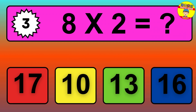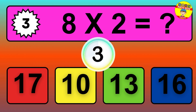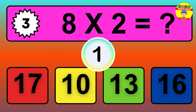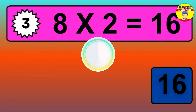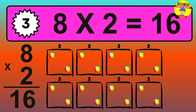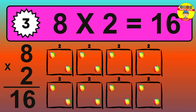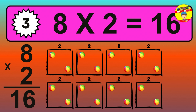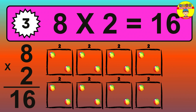Question 3. 8 times 2 equals what? The answer is 8 times 2 is 16. To calculate, we have 8 groups with 2 balls each one. So, how many balls do we have? 16 balls.